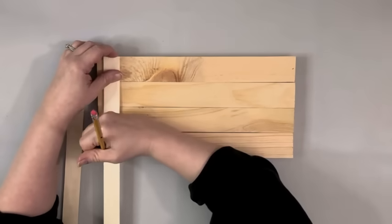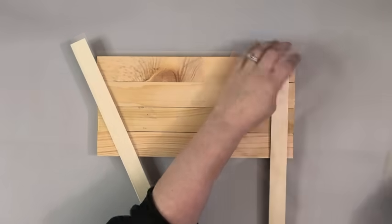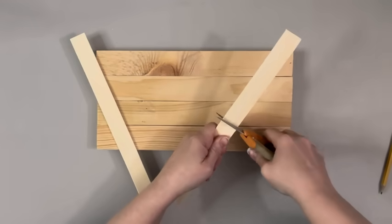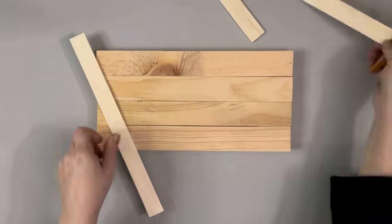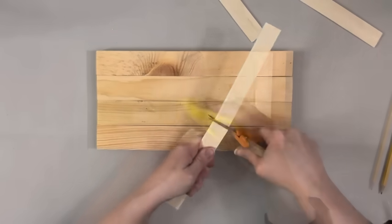After I let that dry, I then took these 12-inch stir sticks that I get from Amazon and I held them up along the edge and just marked off where I needed to cut them. And I cut them with Fisker shears and then sanded off those edges that I had cut.